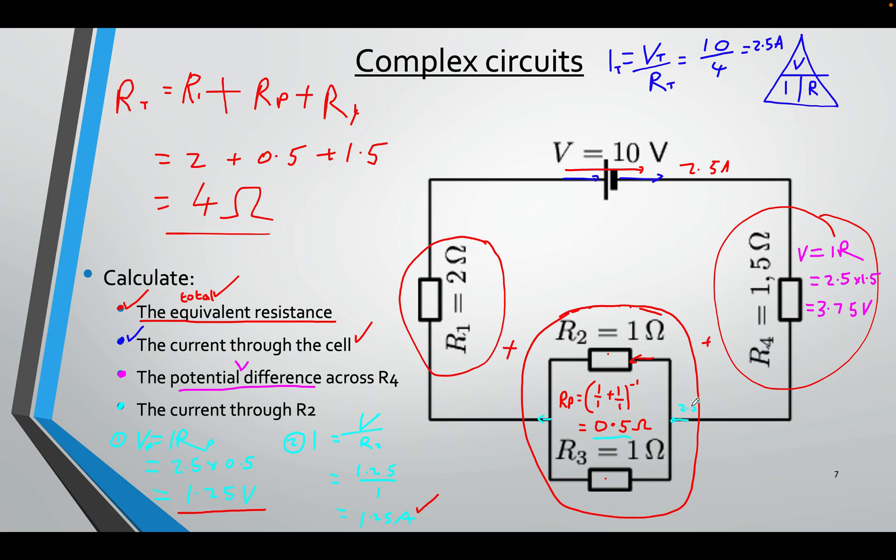So that means 2.5 is coming this way. 1.25 went this way. That means the remainder of the current must have went this way, because there are only two paths to follow. And in this case, if this is 1.25, this will also be 1.25. So we have just calculated the resistance here, and I know that the rest will be here.